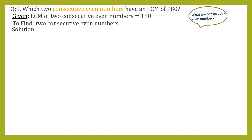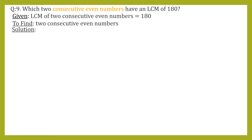What are consecutive even numbers? The series of even numbers starts from 0, 2, 4, 6, 8, 10, 12 and so on — for example, 48 and 50, or 100 and 102. When we pick any two numbers that come one after the other in this series, they can be called consecutive even numbers.